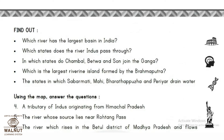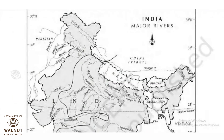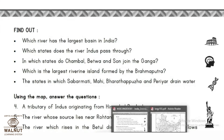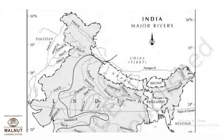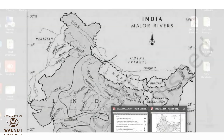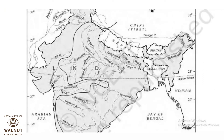The largest riverine island formed by the Brahmaputra is Majuli, with an area of 352 square kilometers. Next question: states drained by Sabarmati, Mahi, Bharatpuzha, and Periyar. Sabarmati drains Rajasthan and Gujarat before draining into the Arabian Sea. Mahi flows through Madhya Pradesh and Gujarat.